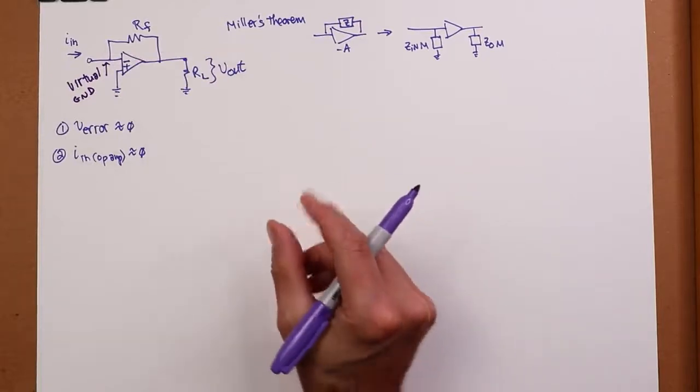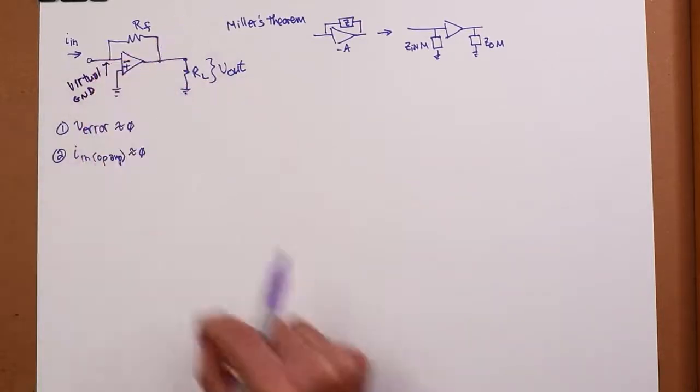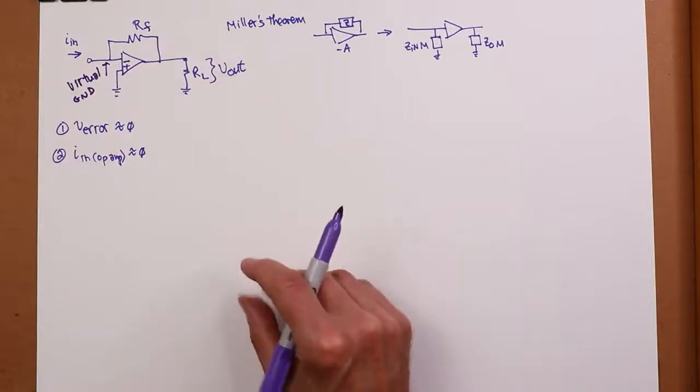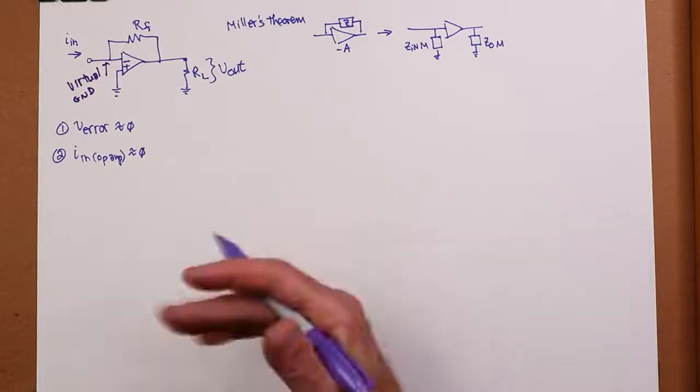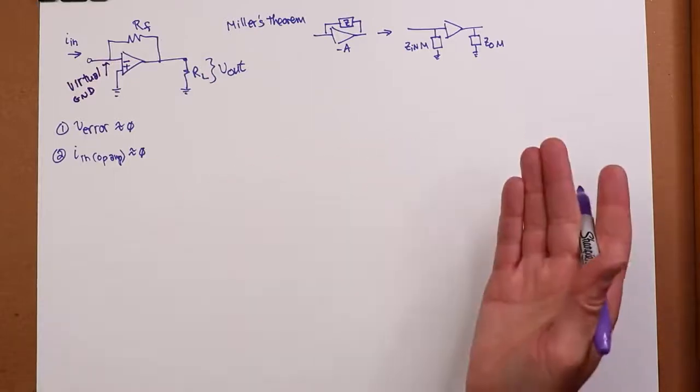clip the black lead of an oscilloscope probe to that point. It's not a true ground, but it's virtually ground in that the voltage there is really, really tiny. It's nearly zero. That makes it an ideal current summing node.